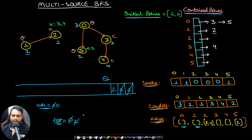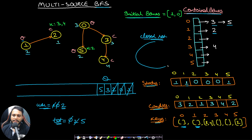Dequeue node 2 — its status is closed. We cannot process it now but may find its key later, so save it in a 'closedSet'. Dequeue node 3 — also closed, save it in closedSet as well. Dequeue node 5 — its status is open. Keys found inside box 5: key for box 2. Change status of box 2 to open.